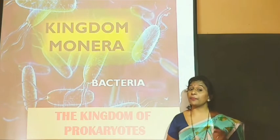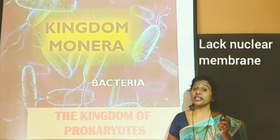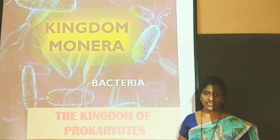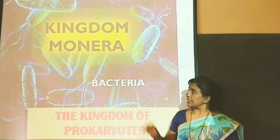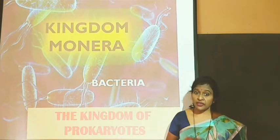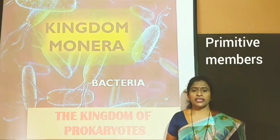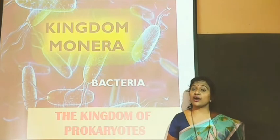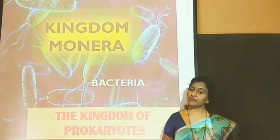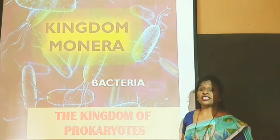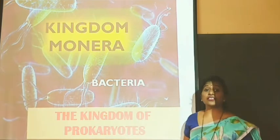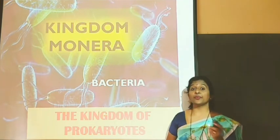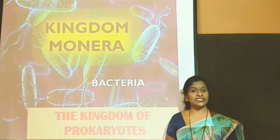What do we mean by Prokaryotes? Organisms which do not have a proper nuclear membrane surrounding the genetic material. Since these organisms are primitive ones, they are found everywhere. Even a teaspoonful of soil, if we take and analyze under a microscope, we will see thousands of such bacteria in that soil. Since they are the primitive organisms, this kingdom is also called as Prokaryotes, and all Prokaryotes are included in Kingdom Monera.